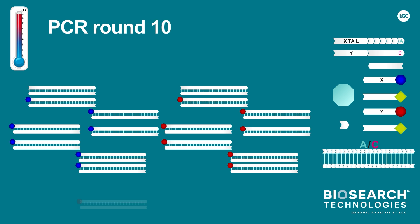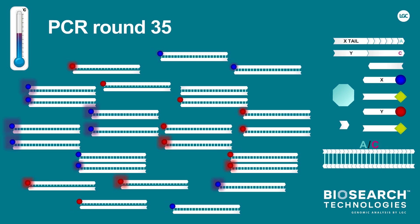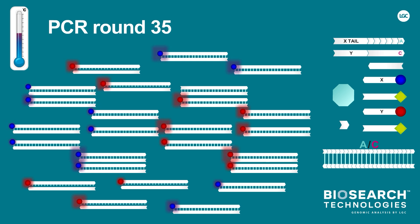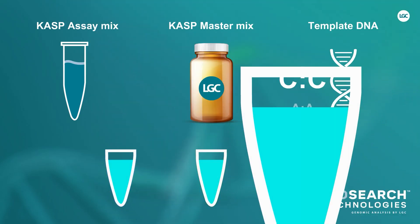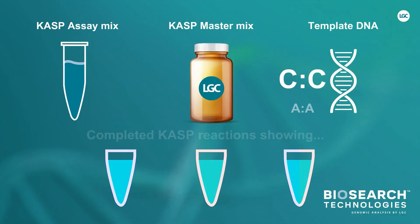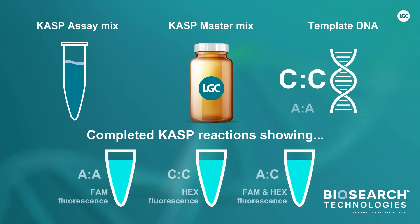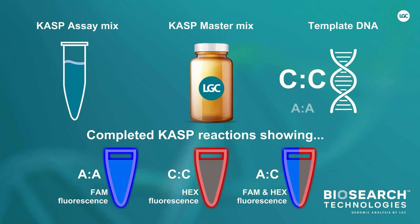In this heterozygous example, the presence of both A and C alleles has resulted in both the FAM and HEX-labeled oligos being incorporated into the PCR product. Both fluorophores are no longer quenched and both will therefore emit fluorescence. The fluorescence from the completed reaction is now measured and this completes the CAASP genotyping reaction for this DNA sample. The final video in this series will describe how the fluorescence produced by CAASP reactions is interpreted to allow the genotypes of the DNA samples to be determined.